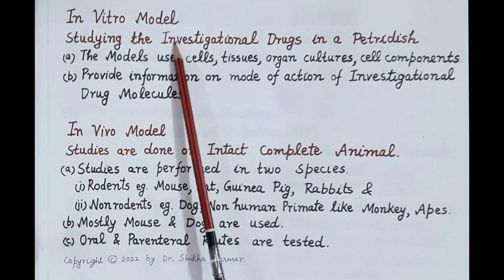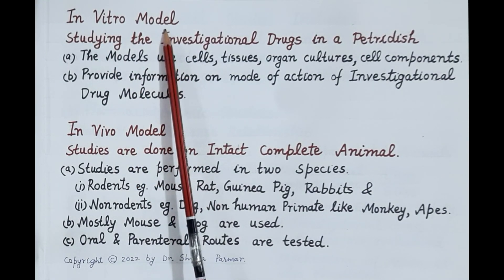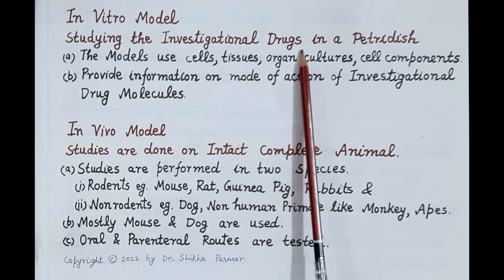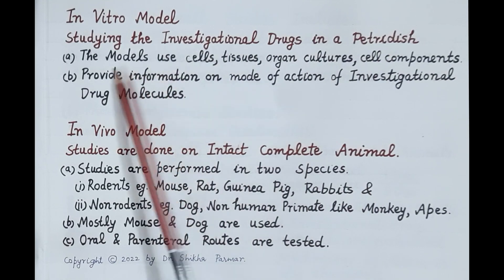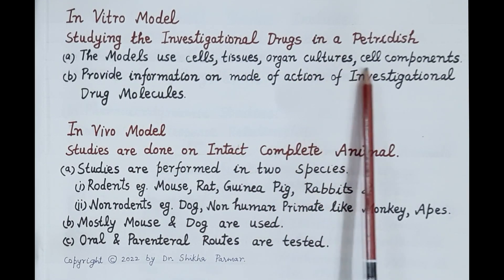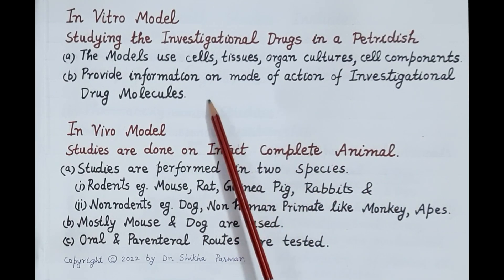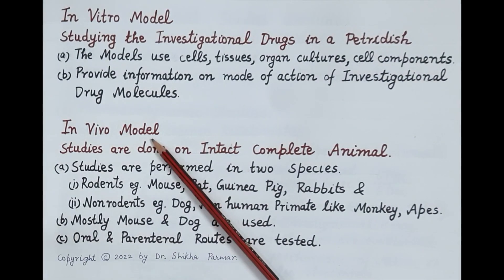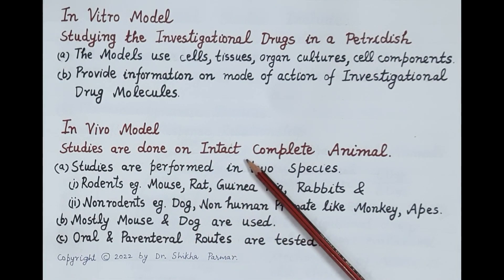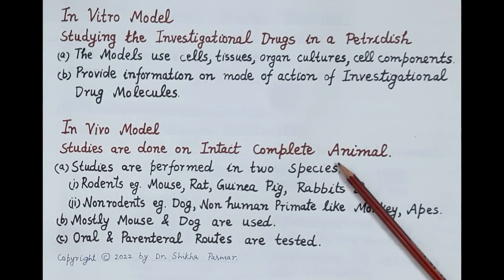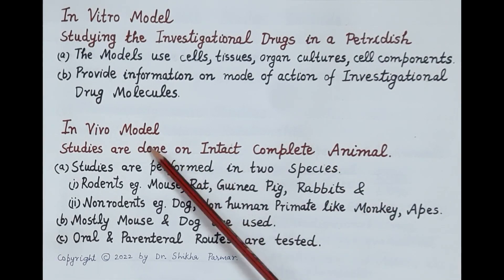The second type is in vitro models. In vitro means outside the body — in a petri dish or test tube. These models use cells, tissues, organ cultures, and cell components derived from animals, and are useful in providing information on the mode of action of investigational drug molecules. In vivo models are the most important: studies are done on intact or complete animal models. Investigational molecules are administered into the animal body and effects are seen; pharmacokinetic, pharmacodynamic, and toxicological studies are performed using in vivo models.